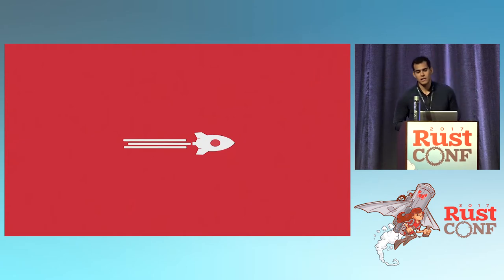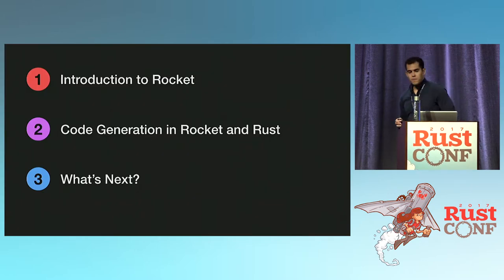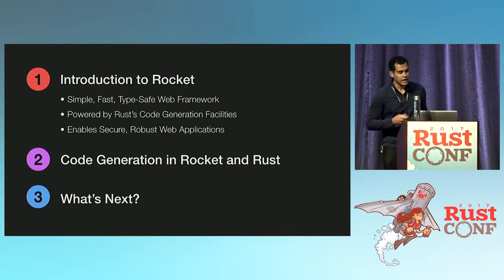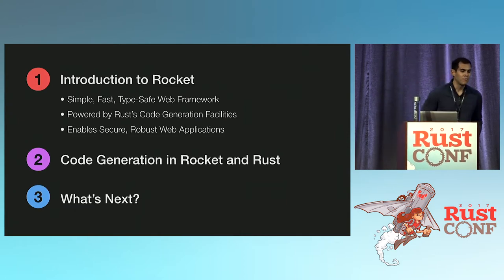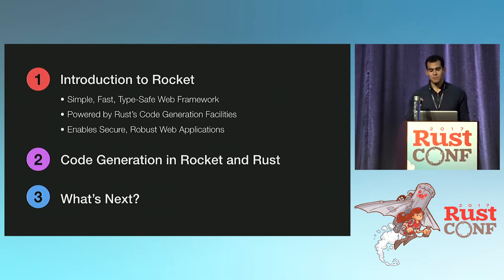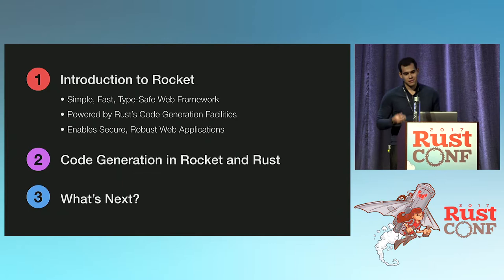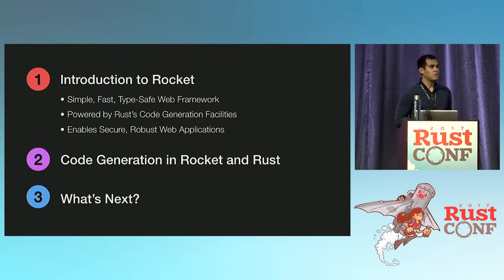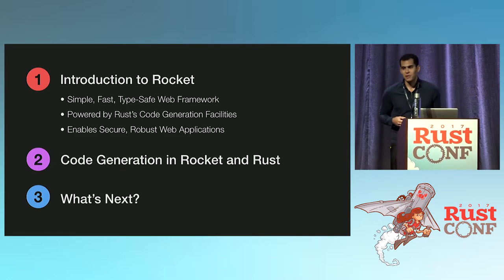The talk is structured in three stages. First, I want to introduce you to Rocket — what I think is a simple, fast, and type-safe web framework for Rust. I'll say a bit about what I mean by simple and type-safe; fast is self-descriptive. And it's powered by Rust code generation — without Rust code generation, we wouldn't have Rocket.